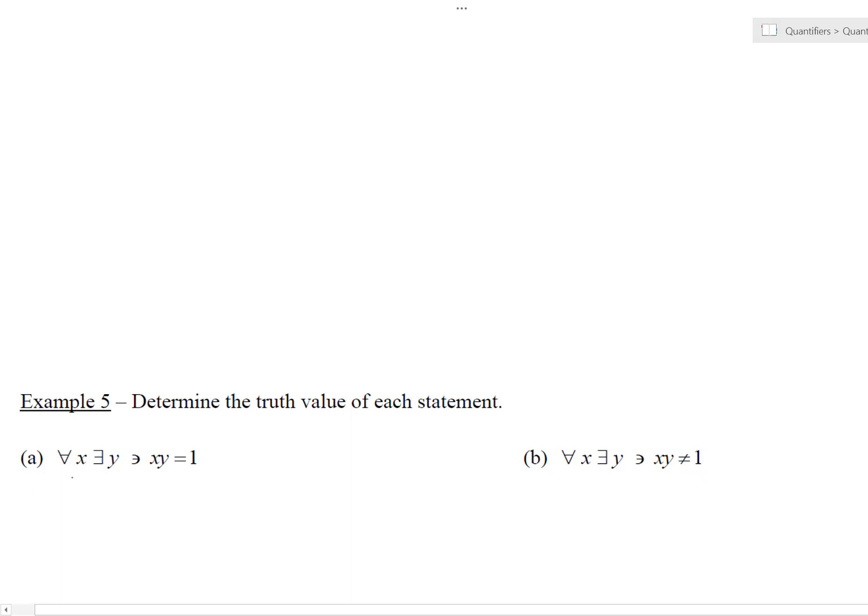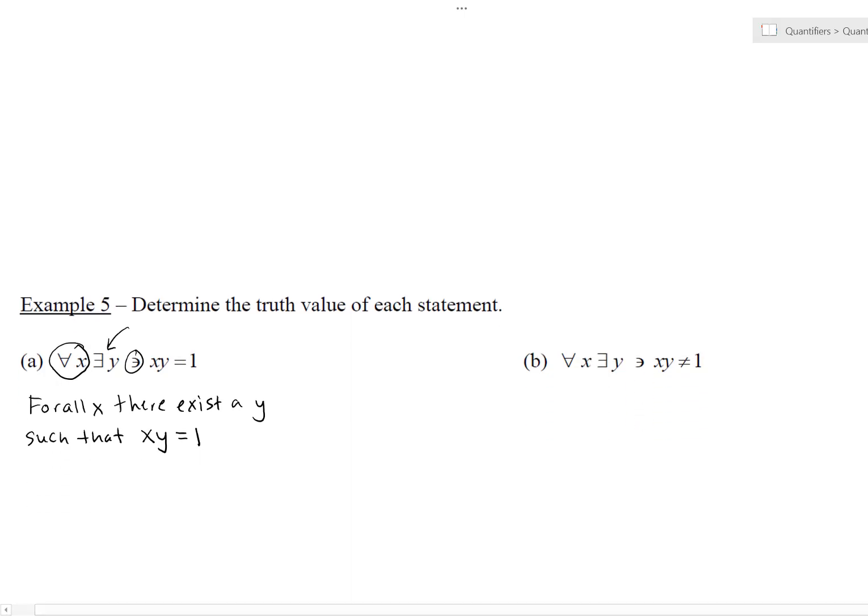Let's just write out what this means in words. We got a 'for all X'. For all X, and then there exists a Y, or a value Y, such that X times Y is one. So there's a statement using quantifiers. The question is, is it true? Well, let's think about it.